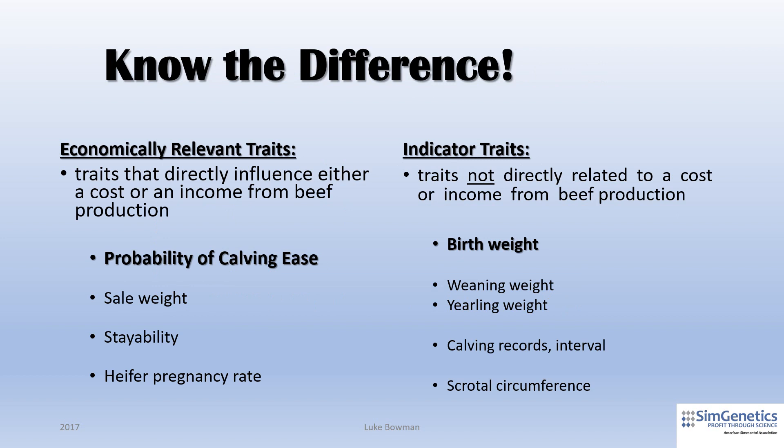The costs of production and the income from production together determine the profitability of a beef enterprise. For a commercial producer, those traits that directly influence either a cost of production or an income from production are considered economically relevant traits. For seed stock producers, the economically relevant traits are those that directly influence cost or income for their commercial customers. Those traits that are not directly related to a cost or income of production are, at best, indicator traits and, at worst, misleading.